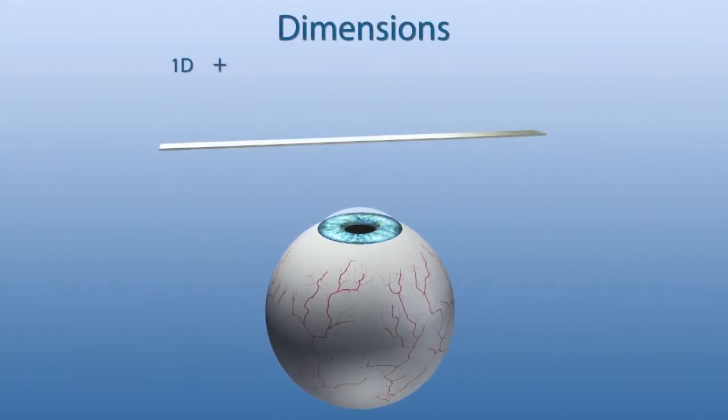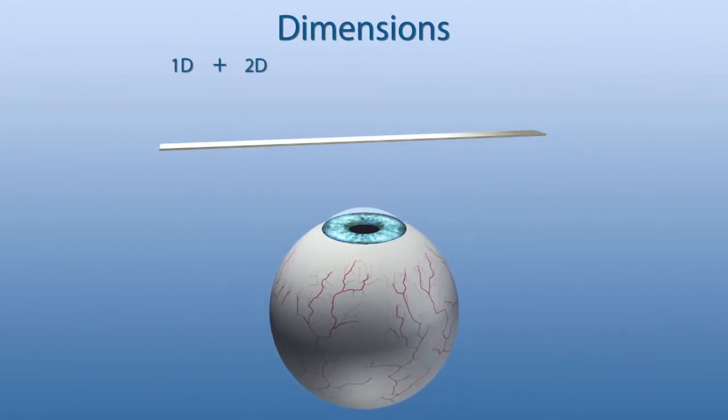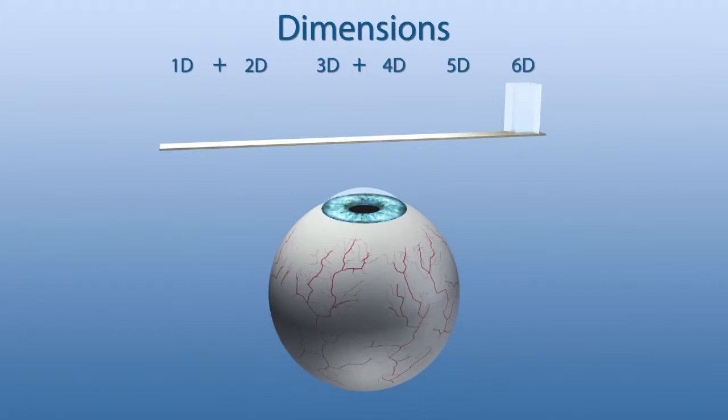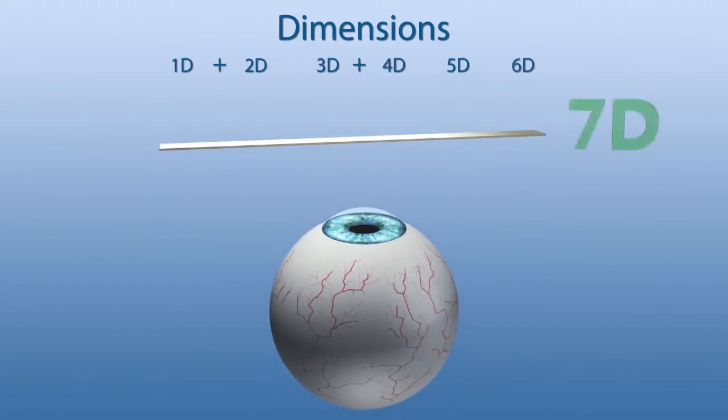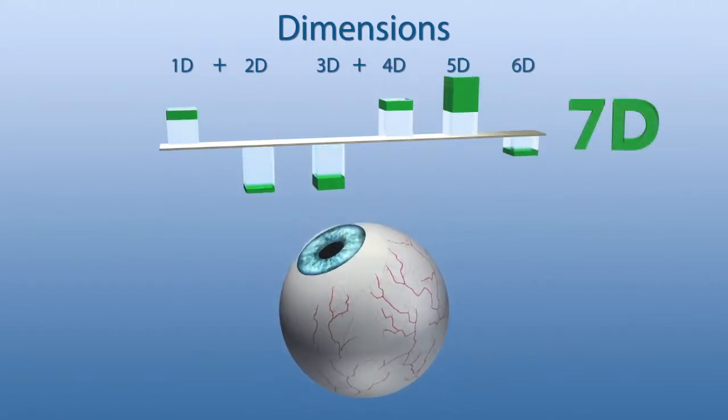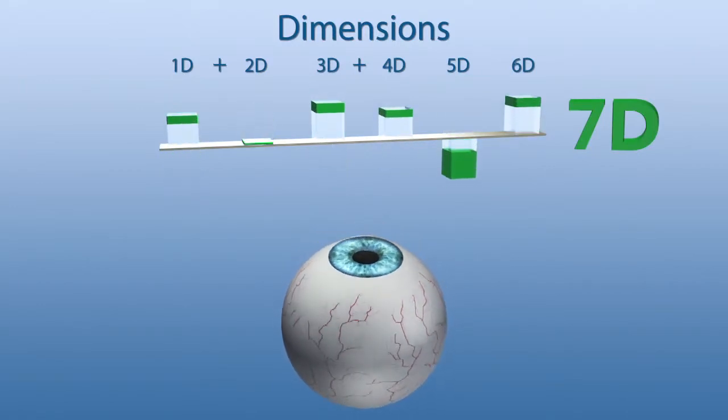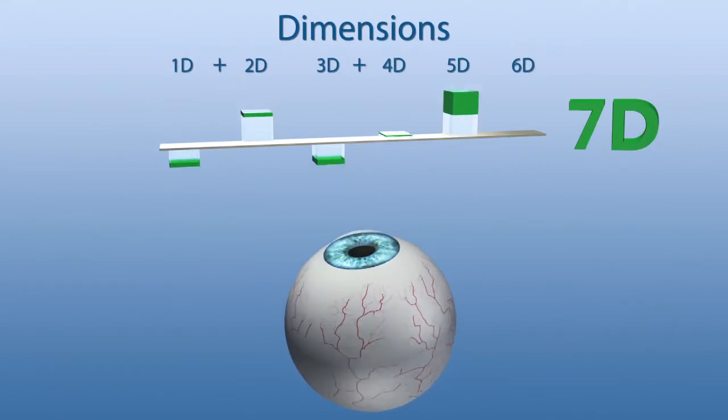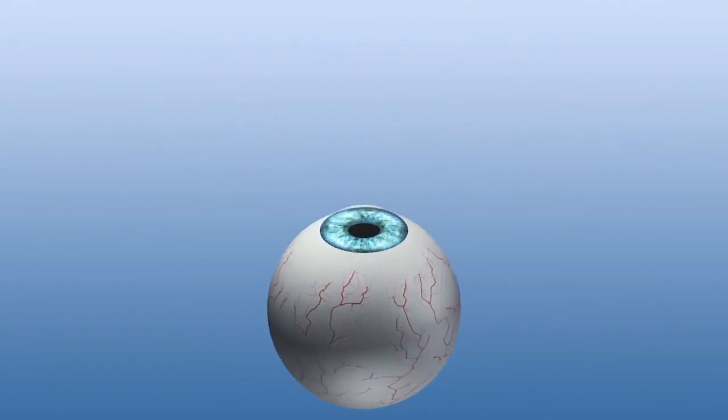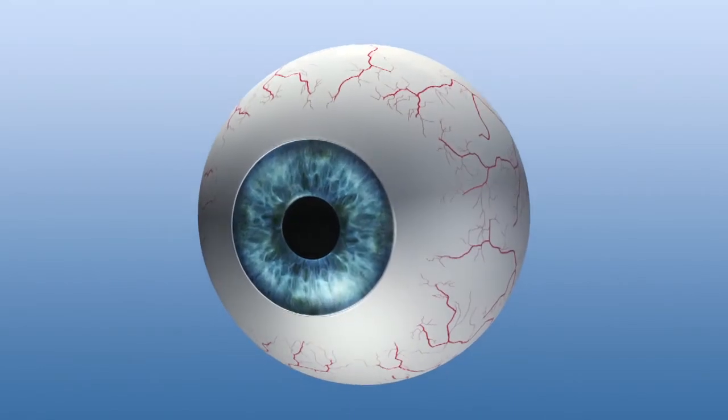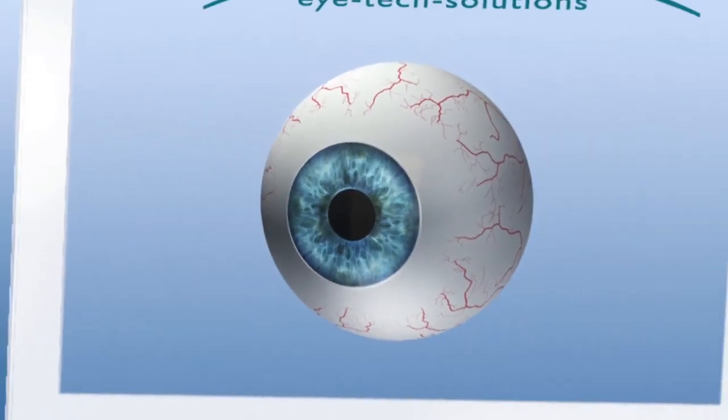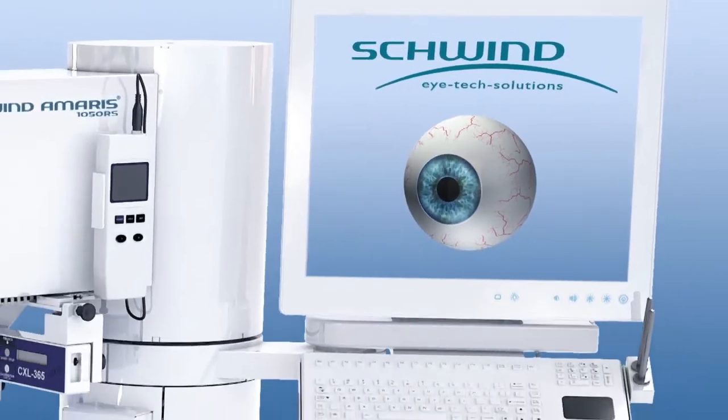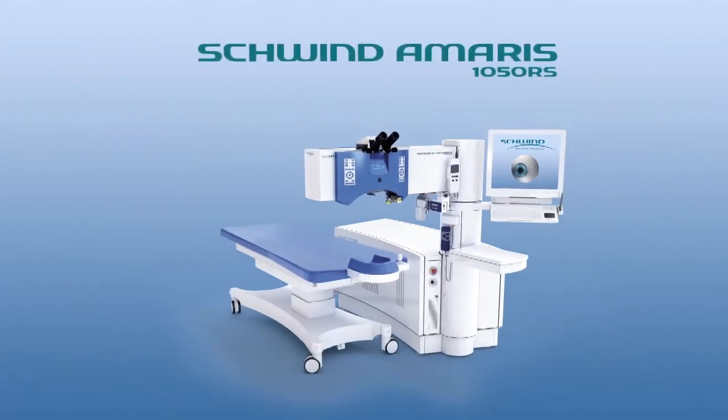This procedure enables a latency-free ablation process and even more safety for the patient. The 7D Schwind Amaris 1050 RS is the only available excimer laser system providing eye tracking in space and time.